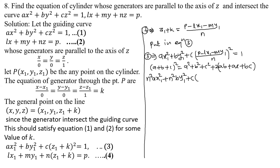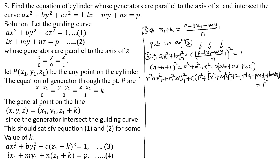Applying the expansion formula with a = p, b = −Lx₁, c = −my₁: we get p² + L²x₁² + m²y₁², plus two times ab: 2(−pLx₁), plus two times ac: 2(−pmy₁), plus two times bc: 2(Lm·x₁y₁). This equals n² since we multiplied throughout by n².